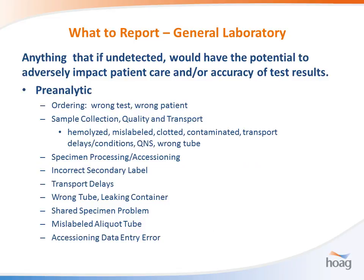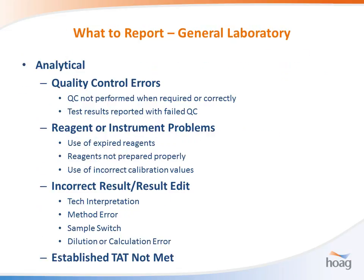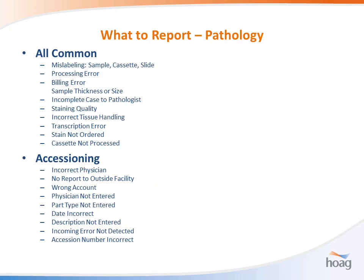What to report: certainly anything that, if undetected, would have the potential to adversely impact patient care or the accuracy of test results. You should be analyzing non-conforming events in all three phases of testing — pre-analytic, analytic including turnaround times not met, and post-analytic including wrong results filed, problems with your electronic medical record, critical values not called, safety events, and customer complaints. We encourage staff not to make a judgment as to the validity of a complaint — we want every complaint registered so we can follow up. Our pathology department has developed a specific list of what they consider a non-conforming event, and Point of Care has developed a list as well.